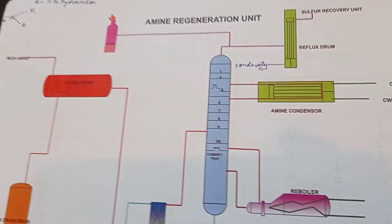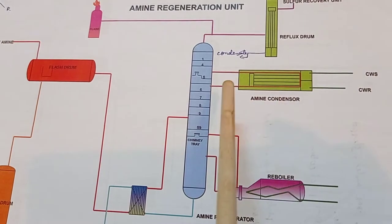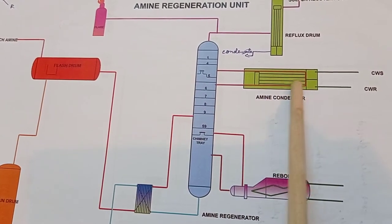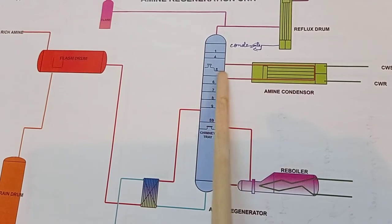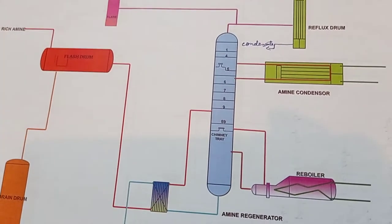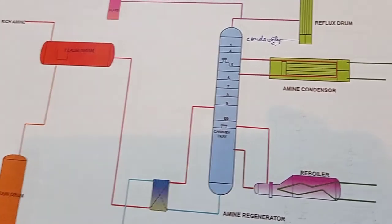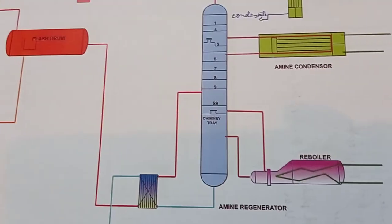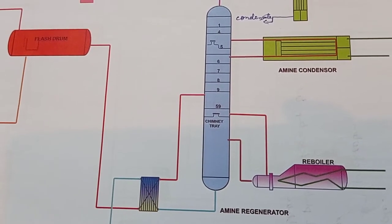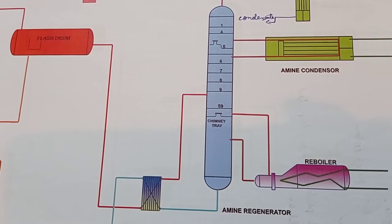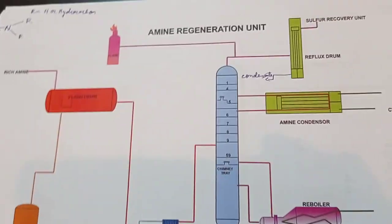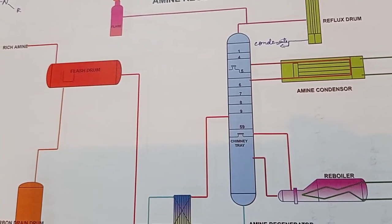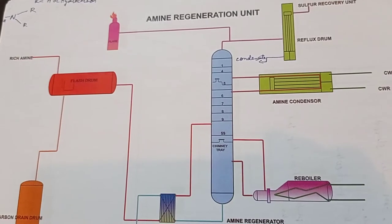In the amine condenser, cooling water is supplied; when temperature rises, the control valve opens and sends cooling water to reduce it. To heat the amine, the reboiler sends steam; when temperature is sufficient, steam is cut off. We maintain the amine regenerator temperature above 120°C so that H₂S can be separated from the amine solution.